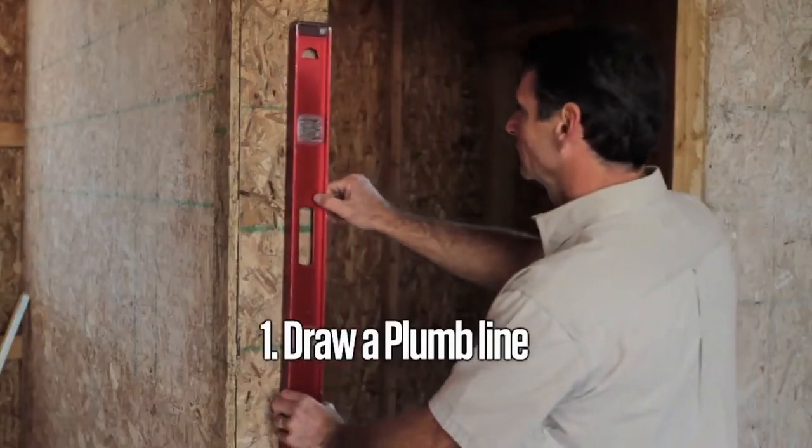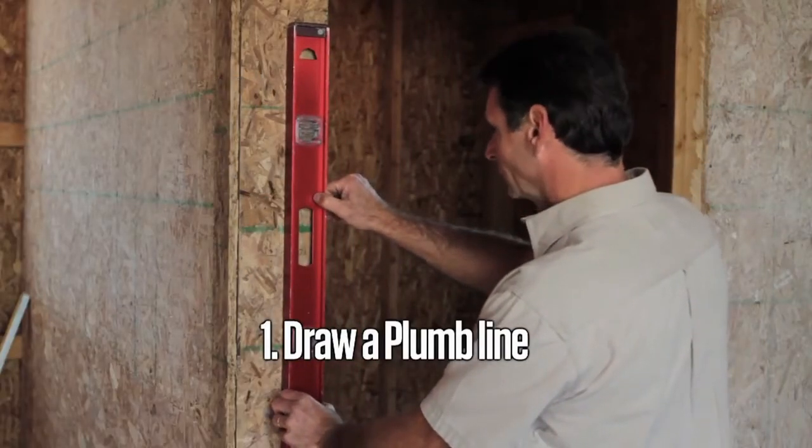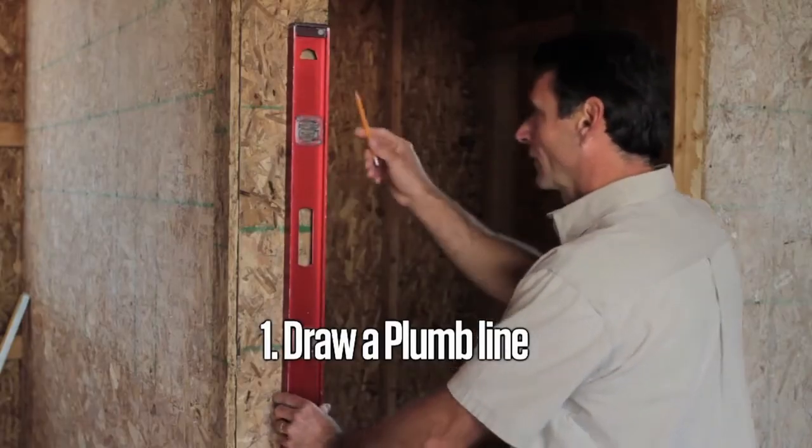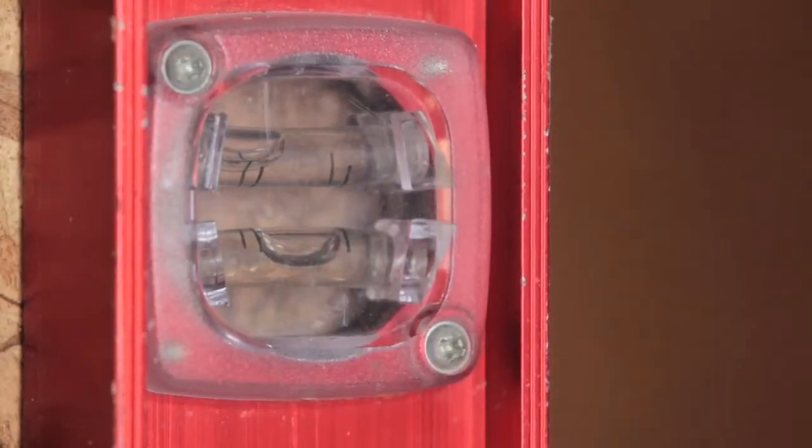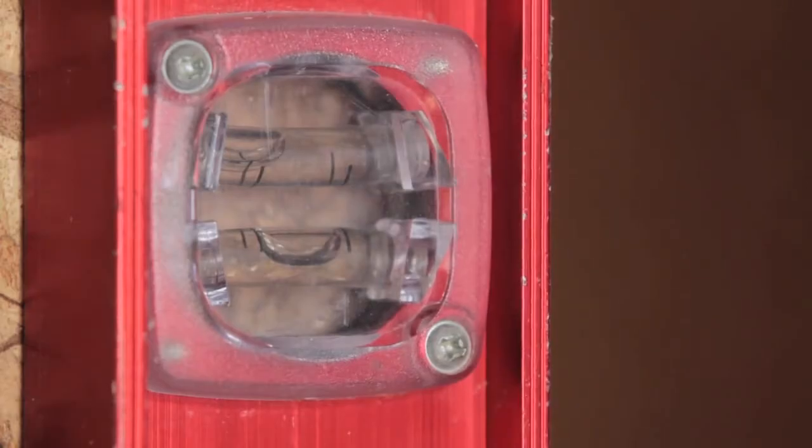In the room the door swings into, draw a plumb line on the wall approximately half an inch in from the rough opening. You don't have to be exactly half an inch in, but make sure the line is perfectly plumb. Ensure the bubble on the level is exactly in the middle and draw your line with a pencil.